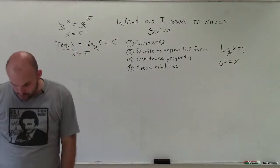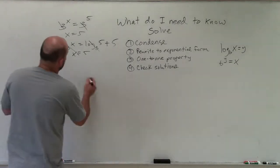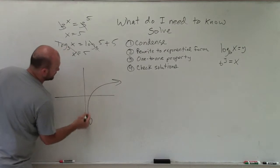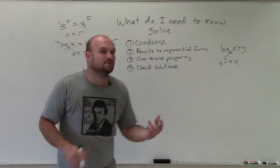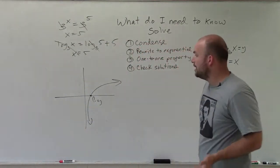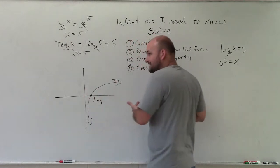The next thing is to check your solutions. Ladies and gentlemen, the parent graph of a logarithm looks like this. It does not look like a quadratic. If you have two solutions, one of those solutions is going to be extraneous. There's only one solution, and more often than not, it's going to be positive.